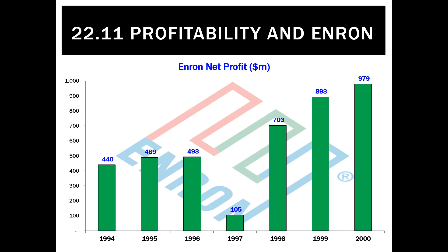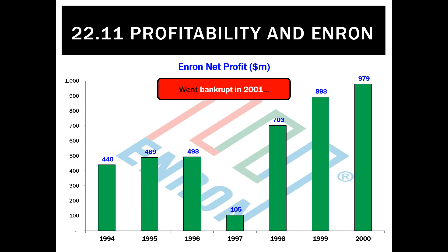So Enron, with such a large net profit, did go bankrupt in 2001. If we go back and look at the financial reports for 2000, are there any clues that this business wasn't very profitable?